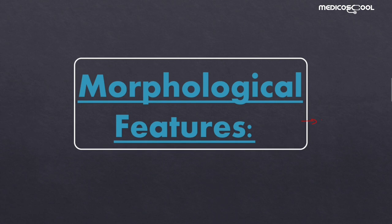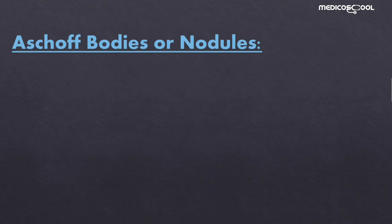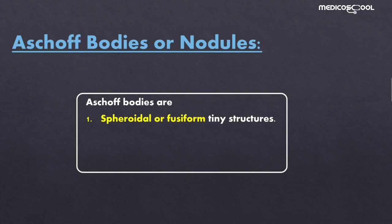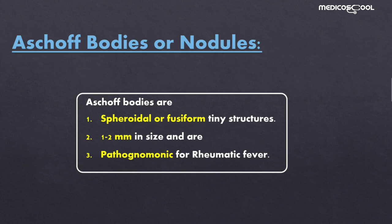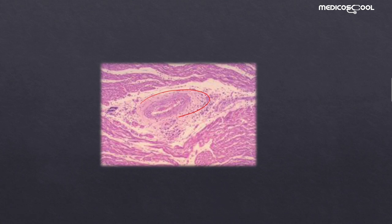Today we are going to discuss the morphological features of acute rheumatic fever. One of the most important and pathognomonic features is the Aschoff bodies or Aschoff nodules. These are spherical, spheroidal, or fusiform tiny structures about 1 to 2 mm in size, and they are the pathognomonic morphological feature of rheumatic fever. This is a picture of Aschoff bodies or Aschoff nodules, whose components we will discuss in the coming slides.